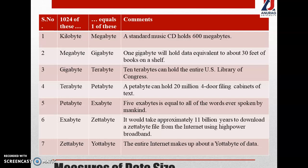As an example, one gigabyte is 1000 megabytes, which can hold data equivalent to 30 feet of books on a shelf. One terabyte is equivalent to the U.S. Library of Congress, which is equivalent to 124 gigabytes. A petabyte is something like 20 million filing cabinets of text, which is really very huge, forming 1024 terabytes.